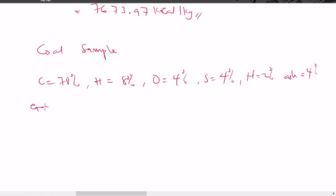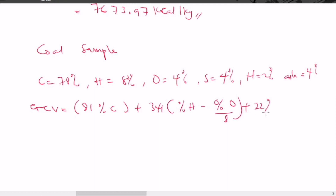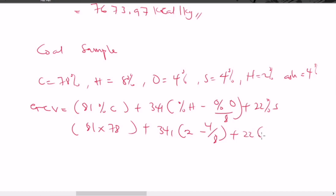Using the formula GCV = 81 × (%C) + 341 × (%H − %O/8) + 22 × (%S), we substitute: 81 × 78 + 341 × (8 − 4/8) + 22 × 4. The result gives a gross calorific value of 8945.9 kilocalorie per kilogram.